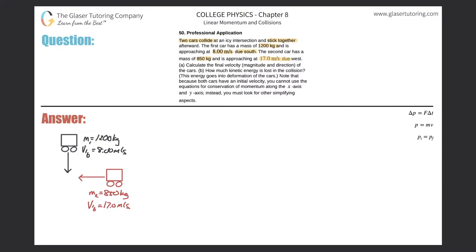Letter A, calculate the final velocity, magnitude, and direction of the cars. So here's our picture. We have the first car heading due south. We have the second vehicle heading due west, and we know that after they collide right here in the middle, they're going to stick together and basically move as one system.